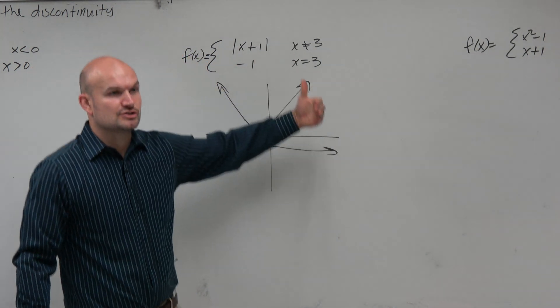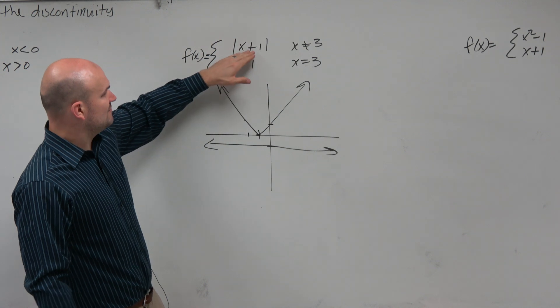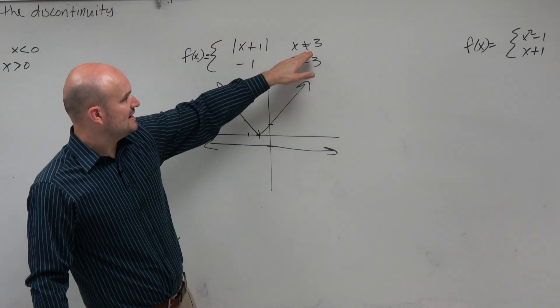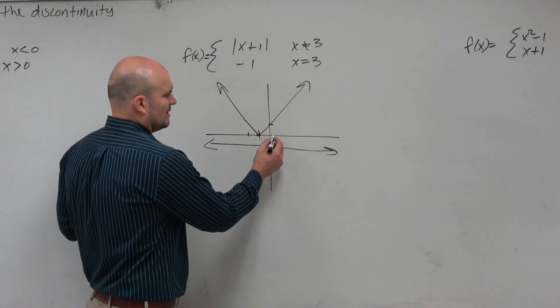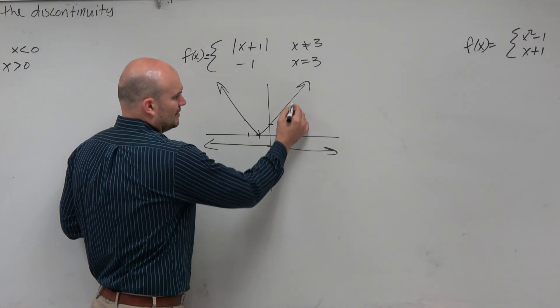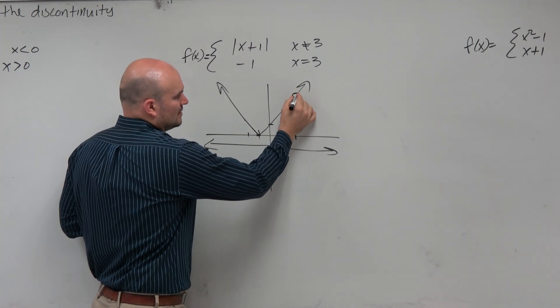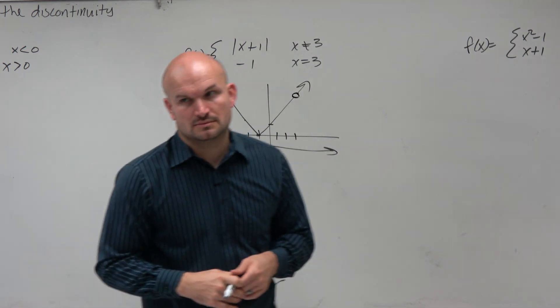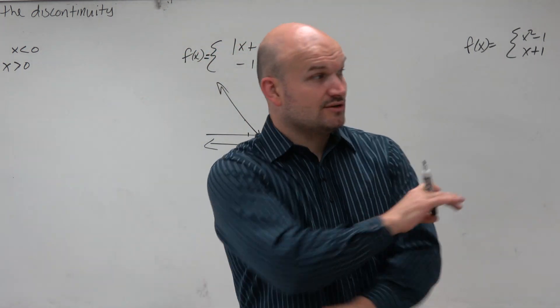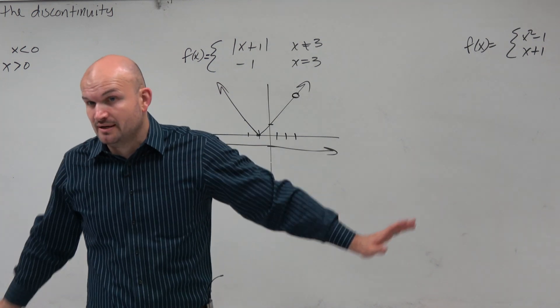So now we've got to look at the constraints. The constraints here is to graph this function for all values except x cannot equal 3. So then we say, well, where is 3? 1, 2, 3. Right there. It can't equal whatever that function value is. We need to put a hole there. So it equals all values on the domain except for 3.